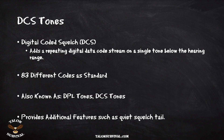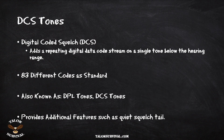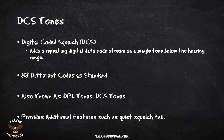DCS adds a number of different features. It gives you more codes to choose from — while you may see up to 512 codes on your radio, there are essentially only 83 unique codes as a standard. You may also see DCS tones called DPL tones. Beyond the additional codes, DCS can also enable quieting of the squelch tail — that brief static sound you hear when someone stops transmitting. When using DCS with this feature, it can alleviate that squelch tail tone commonly used in the commercial sector.